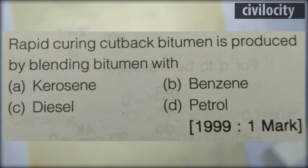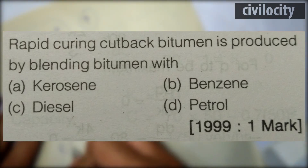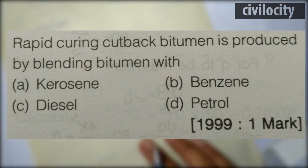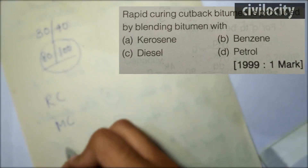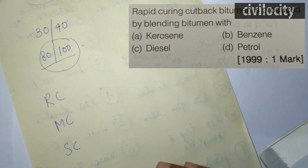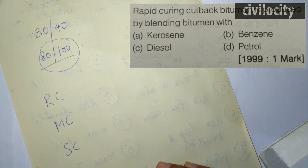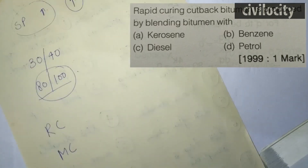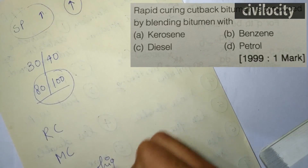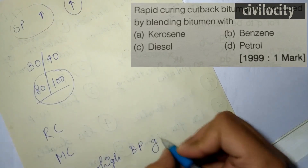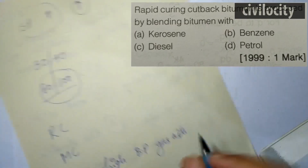Another question: 'Rapid curing cutback bitumen is produced by blending bitumen with — kerosene, benzene, diesel, or petrol?' Before looking at the solution, let me explain the types. Slow curing cutback bitumen is fluxed with high boiling point gas oils. Medium curing cutback bitumen is fluxed with intermediate boiling point solvents like kerosene.